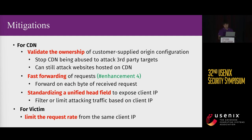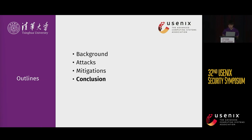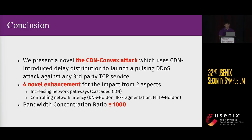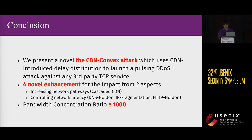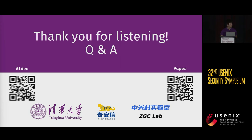For the victim, we suggest adding an HTTP request rate limiter whenever possible. In summary, our paper proposed a novel CDN-convex attack that leverages the variety of path latency to launch pulsing DDoS attacks against any TCP services. Besides the basic attack, we also proposed four enhanced attacks, achieving a bandwidth concentration ratio of over 1,000. That's all for my presentation. Thank you all for your time. If you have any questions, please feel free to ask.